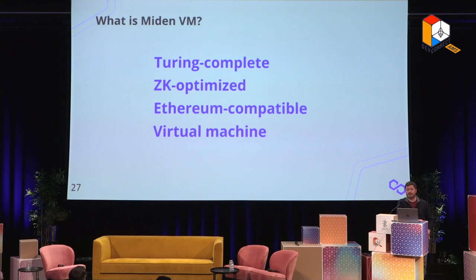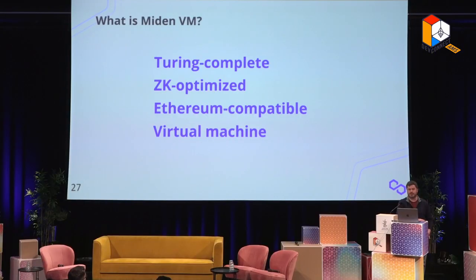Let's talk about Polygon Miden and the choices we made. Polygon Miden VM is a Turing Complete, ZK Optimized, Ethereum Compatible Virtual Machine. Turing Complete means you can execute any smart contract. ZK Optimized means we've chosen not to be 100% bytecode-compatible with EVM, but to optimize for ZK performance. Ethereum Compatible means we aim to be compatible with Ethereum at the Solidity level.